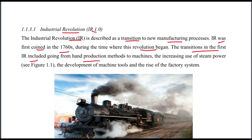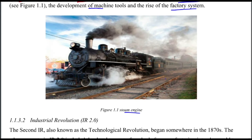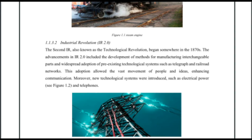The transitions in the first Industrial Revolution included going from hand production methods to machines, the increasing use of steam power, the development of machine tools, and the rise of the factory system.